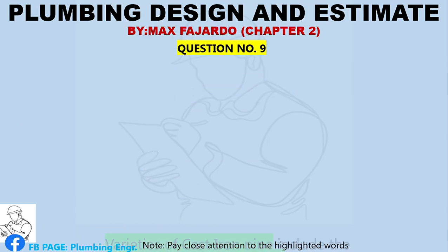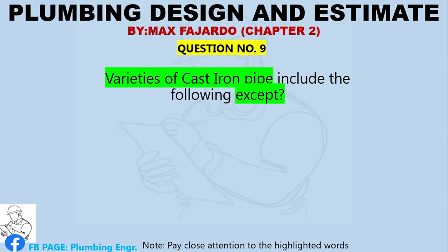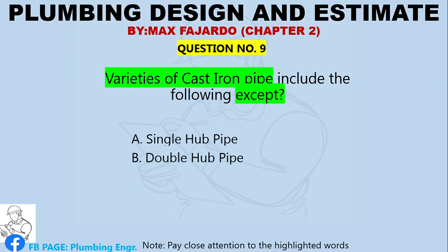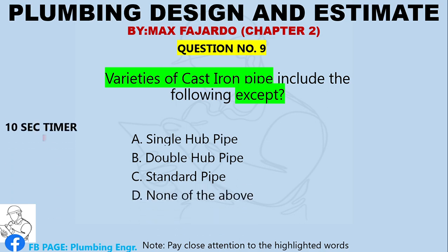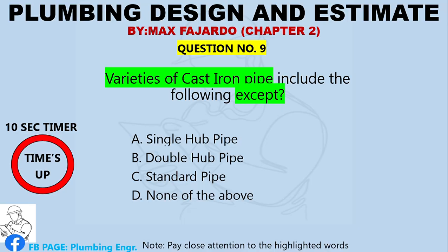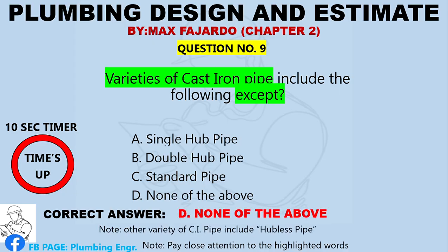Question Number 9. Varieties of cast iron pipe include the following except. A. Single hub pipe. B. Double hub pipe. C. Standard pipe. D. None of the above. Correct answer: Letter D, none of the above. Note: other variety of CI pipe includes hubless pipe.